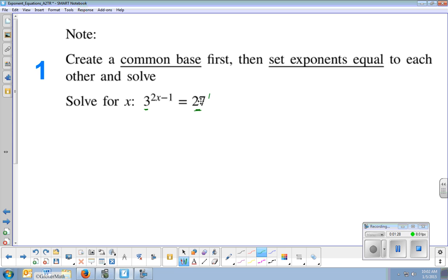And one thing to remember is that you are always going to make your bases as small as they already are. What I mean by that is 3, I'm going to leave as 3. But 27, I see that 27 is a power of 3. And so when you recognize that one of the numbers on one side is a power of the number on the other side, that's going to be your common base.